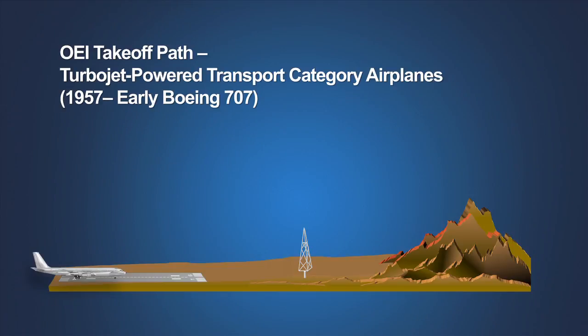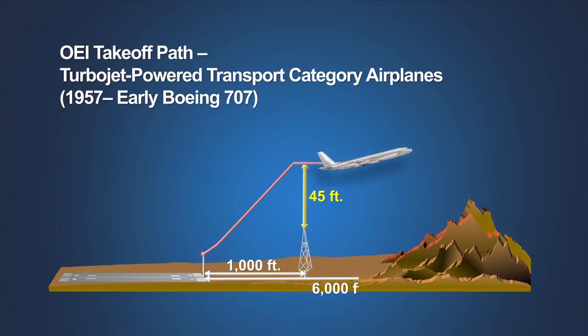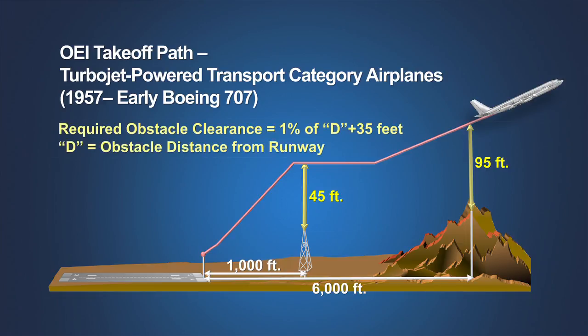To provide adequate obstacle clearance for the new turbojet airplanes, the air carrier operating rules introduced for these new airplanes in 1957 provided an increasing margin of obstacle clearance as the airplane traveled further from the end of the runway. These new rules required that the takeoff path clear any obstacle by 1% of the obstacle's distance from the end of the runway plus 35 feet until the airplane was 1,000 feet above the runway. These rules proved cumbersome for operators to use and were quickly modified, being applied only to early Boeing 707s.